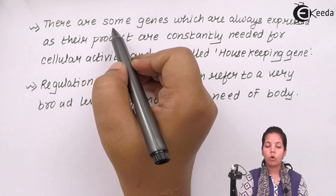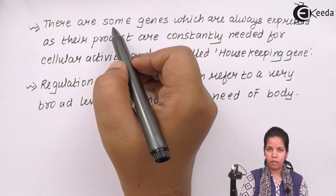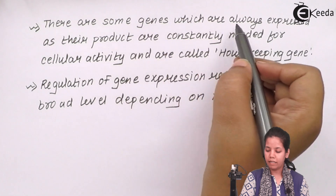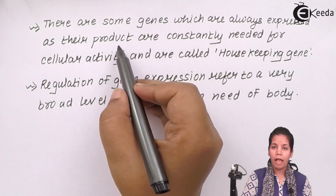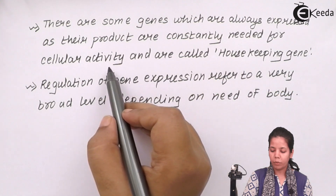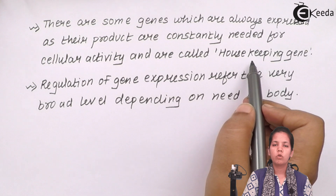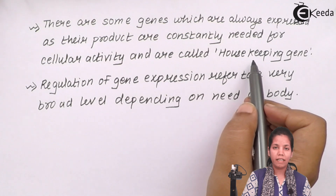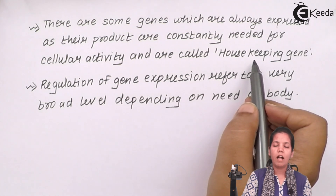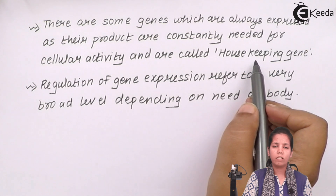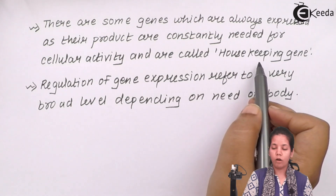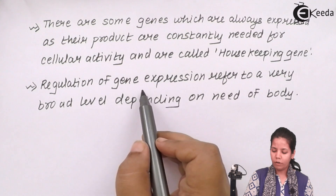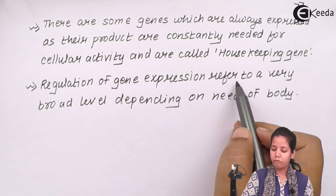There are some genes which are never expressed, or which are expressed only when required. But there are some genes which are always expressed because their products are constantly needed for cellular activities — these are termed housekeeping genes. For example, the gene that makes insulin is a housekeeping gene. The gene that makes keratin, adrenaline, or epinephrine are all housekeeping genes, because these protein products are constantly required in day-to-day cellular processes. Even all the ATP-forming machinery is a housekeeping gene, because ATP is constantly required.